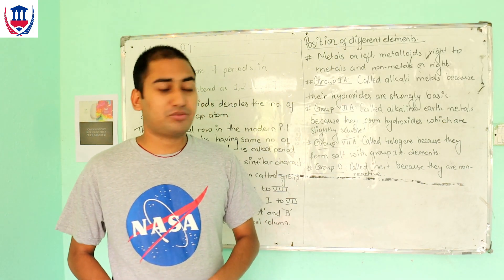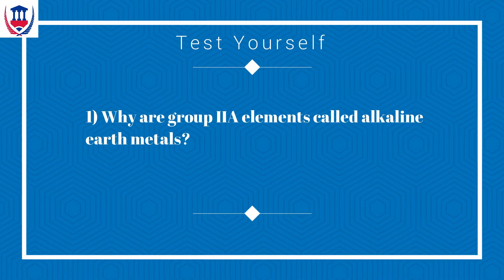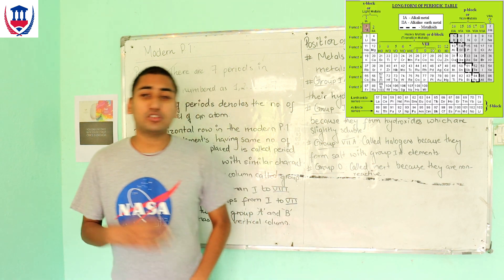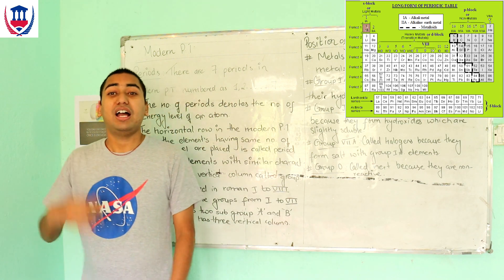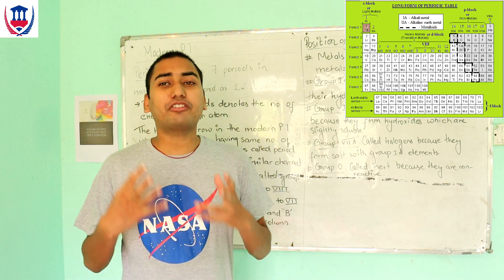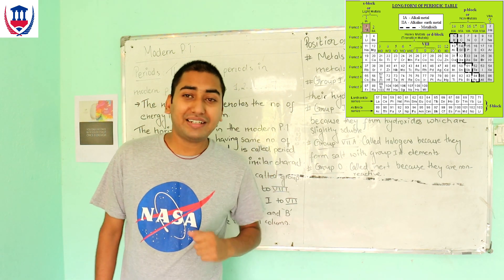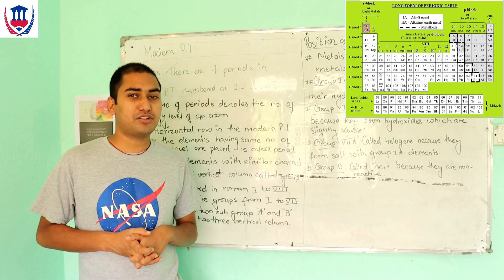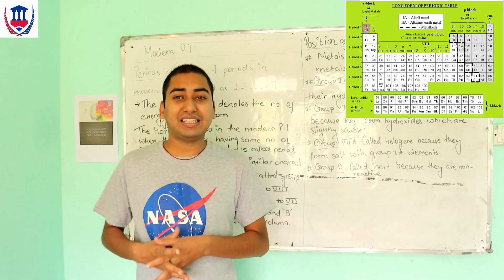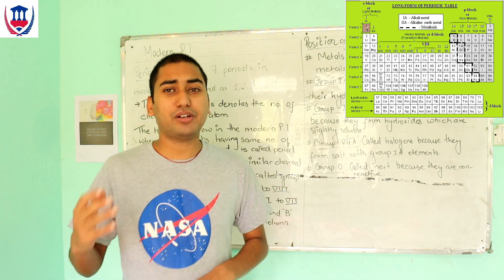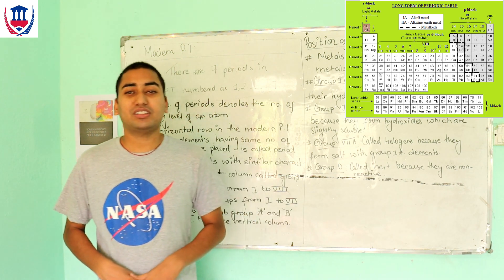Group 17 is called Halogens. They form salts with Group 1 elements. For example, chlorine reacting with sodium forms sodium salt. The group is called Halogens because they form salts while reacting with Group 1 elements.